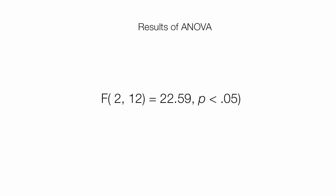The 22.59 is the results of the ANOVA, or your F test results. And finally, this p is alpha, and it represents the level of significance, in this case 0.05.